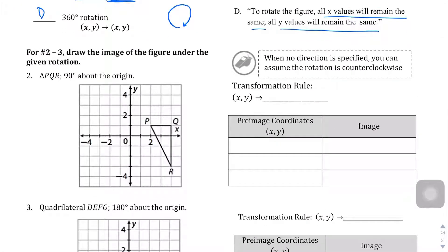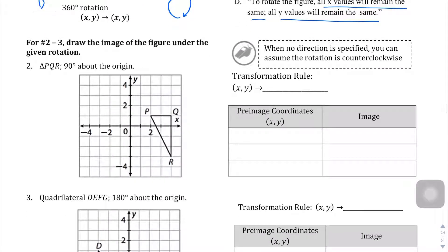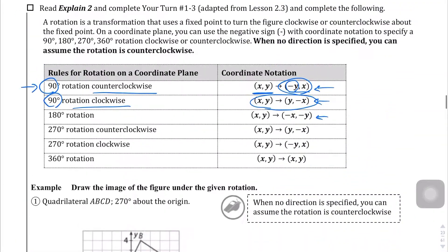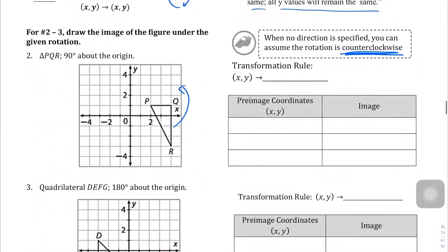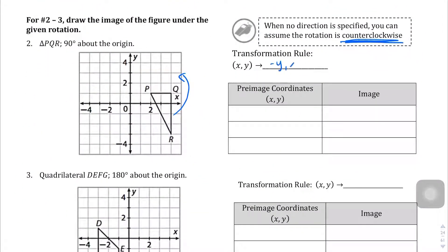Let's look at question number 2. Triangle PQR is going to rotate 90 degrees about the origin. They don't specify clockwise or counterclockwise, so we're going to assume counterclockwise. For 90 degrees counterclockwise, (x, y) becomes (-y, x). So let's get the pre-image coordinates: P is at (2, 1), Q is at (4, 1).